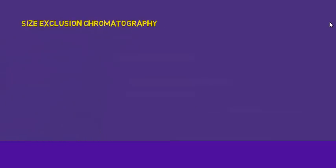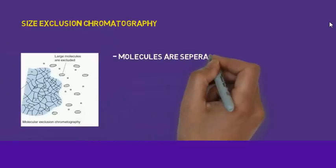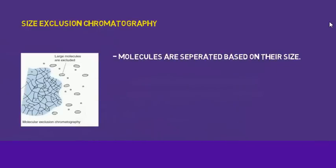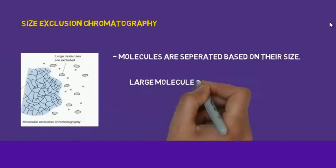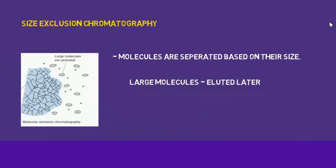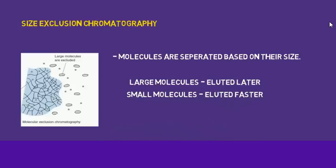In size exclusion chromatography, separation of molecules is based on their size. Large molecules elute later because they cannot enter the pores, while small molecules elute faster because they can enter the pores.